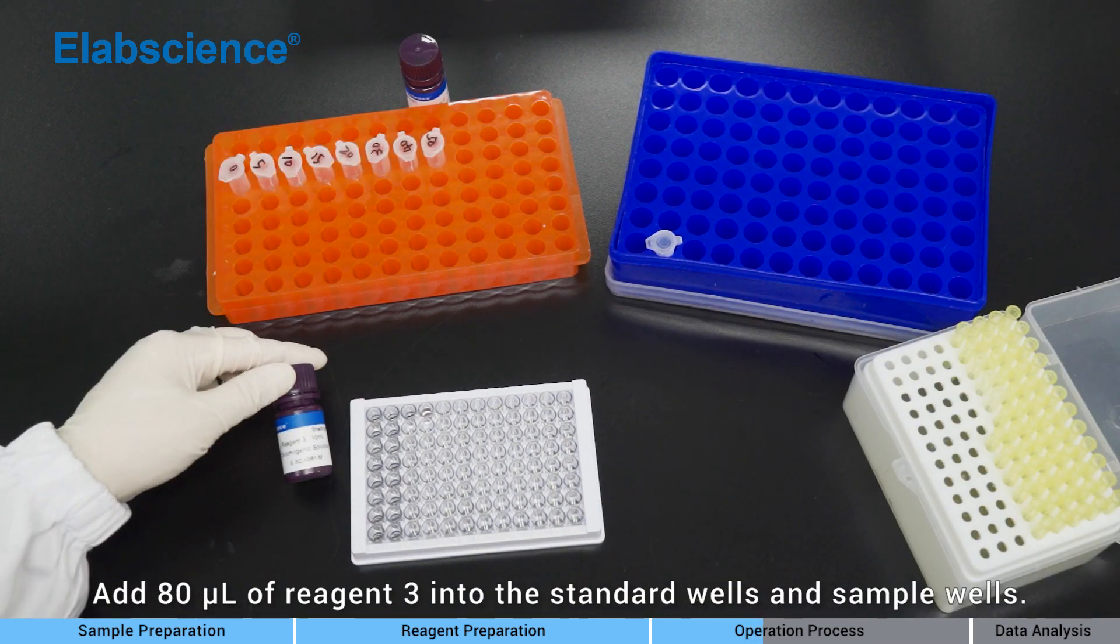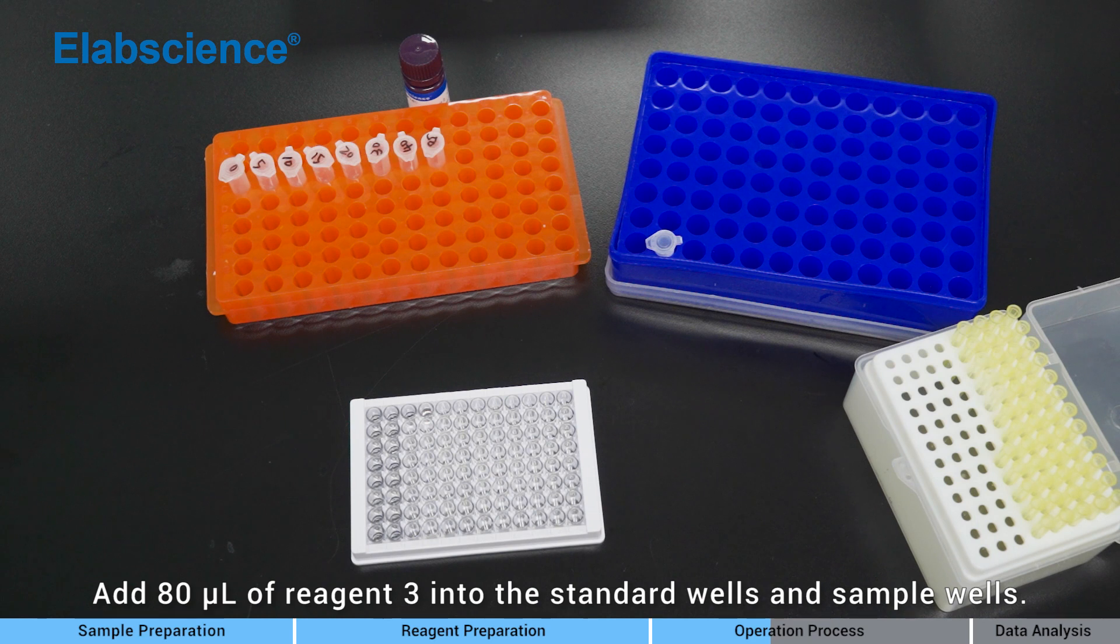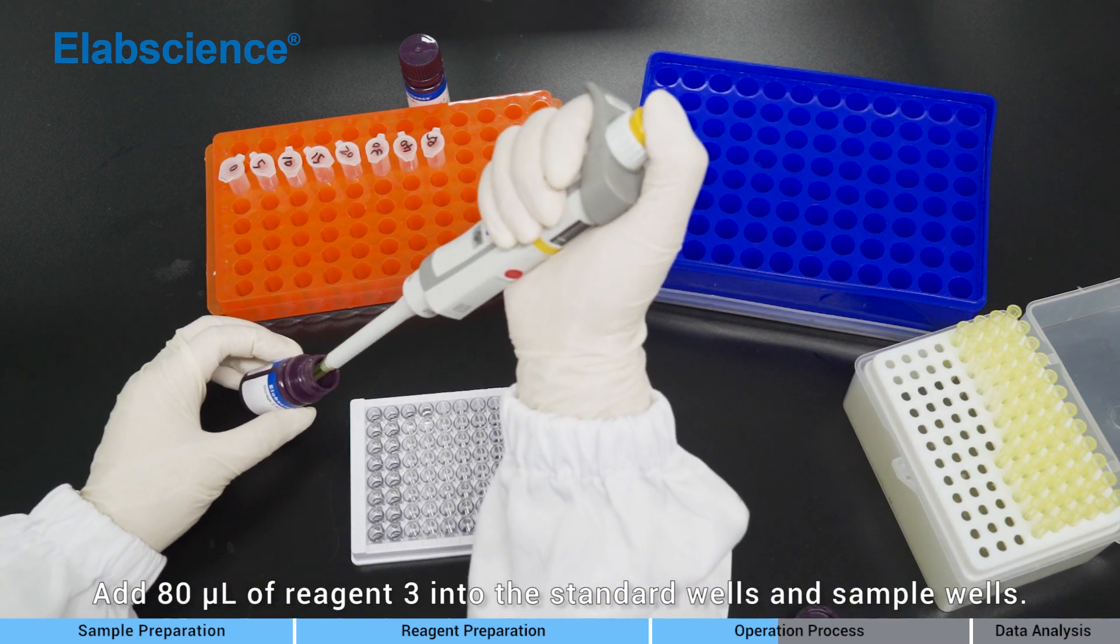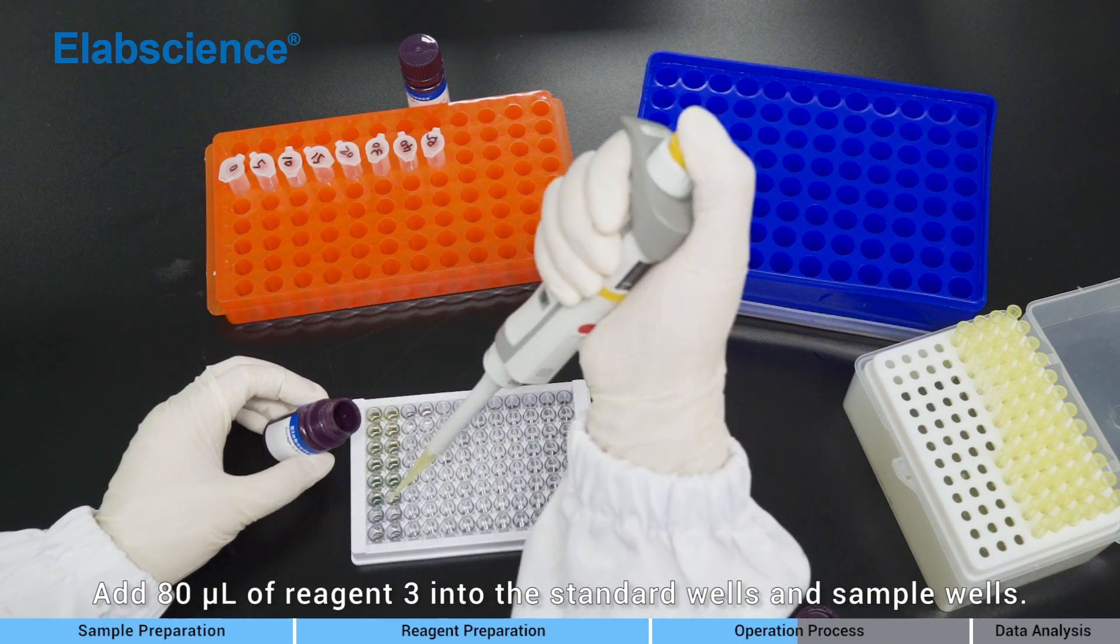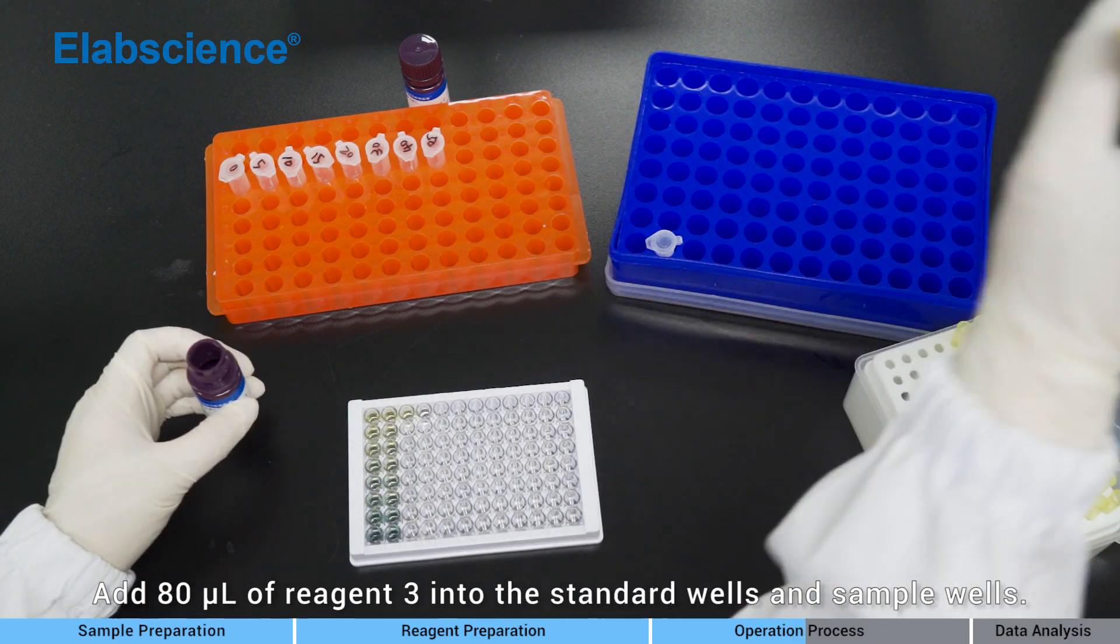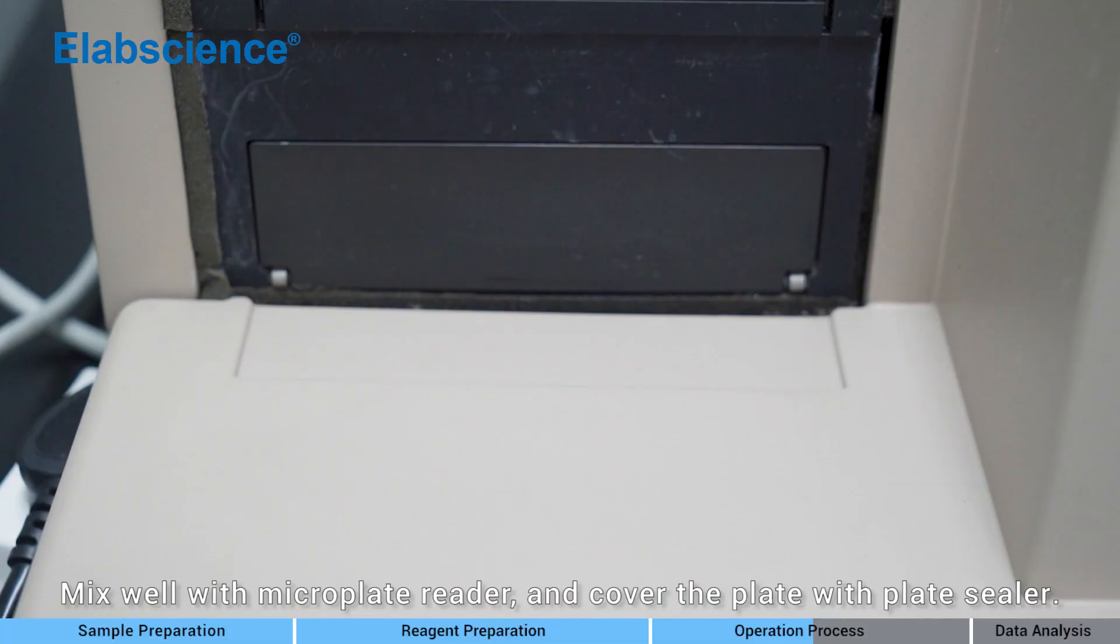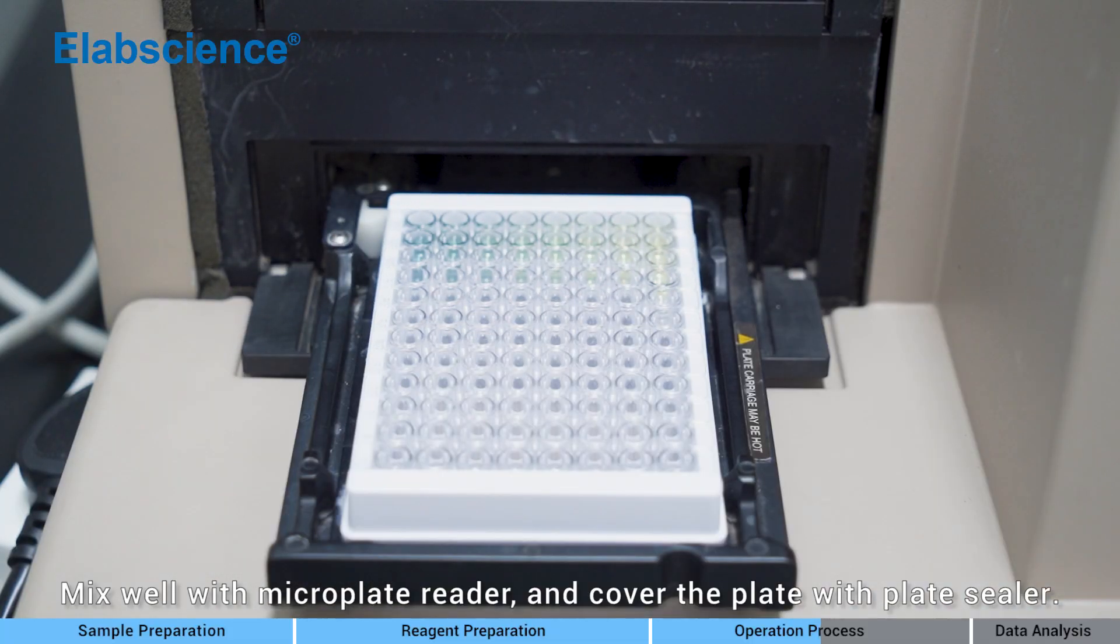Add 80 microliters of reagent 3 into the standard wells and sample wells. Mix well with microplate reader and cover the plate with plate sealer.